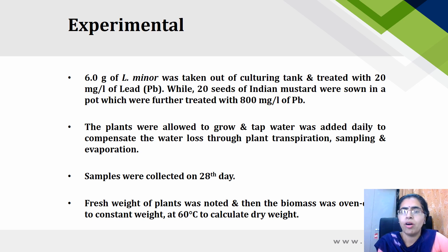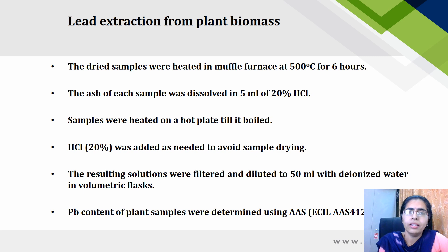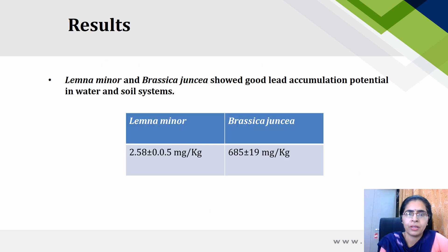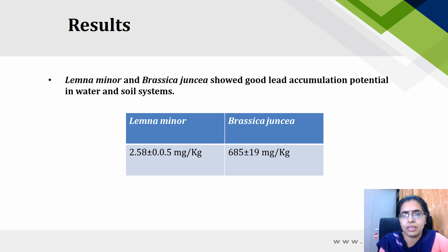Samples were collected on the 28th day. The fresh weight and dry weight of the plants were noted. Then lead was extracted from plant biomass using the standard method with the help of atomic absorption spectrophotometer. The results show that Lemna minor and Brassica juncea both have good lead accumulation capacity in water and soil systems.